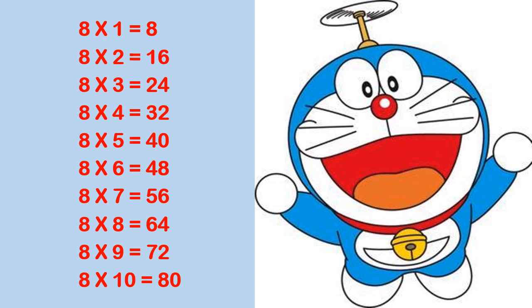Let us revise the table of 8. 8 1s are 8. 8 2s are 16. 8 3s are 24. 8 4s are 32. 8 5s are 40. 8 6s are 48. 8 7s are 56. 8 8s are 64. 8 9s are 72. 8 10s are 80.